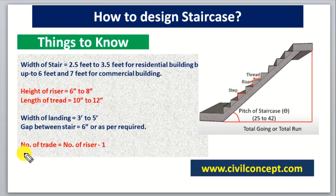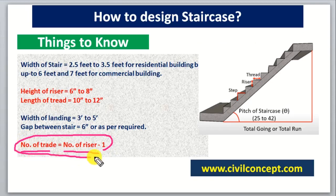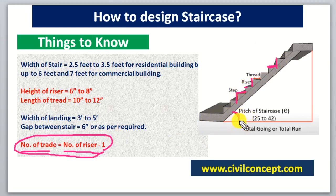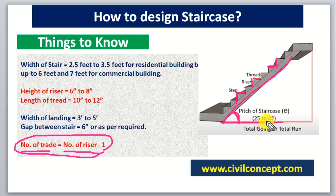The final point to know for designing a staircase: Number of treads = Number of risers − 1. This is the formula you have to remember. This height is known as the riser, this is known as the tread, and both combined make a step. Also, the angle of the stair from horizontal should not be greater than 42 degrees, and it is recommended to keep the angle between 25 and 30 degrees.